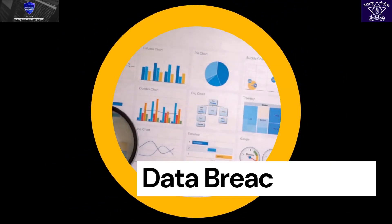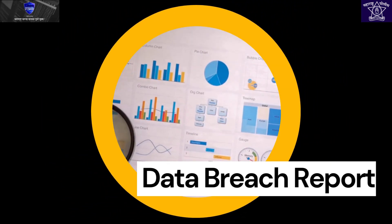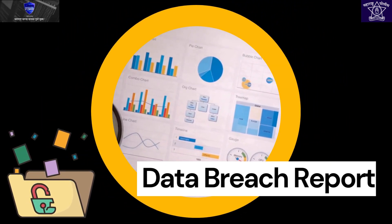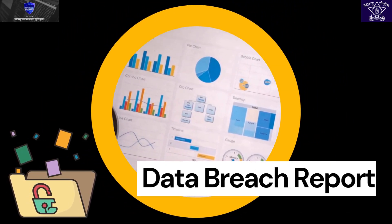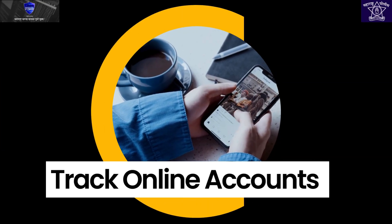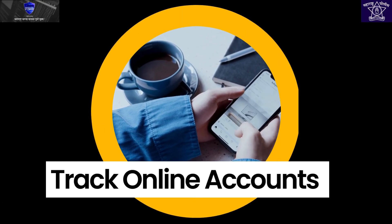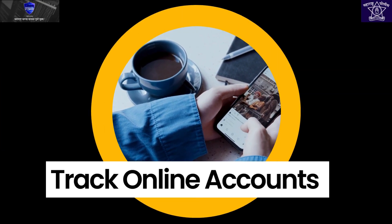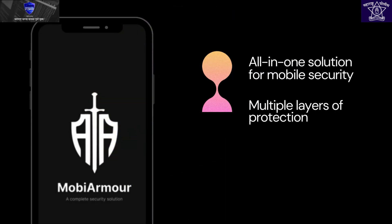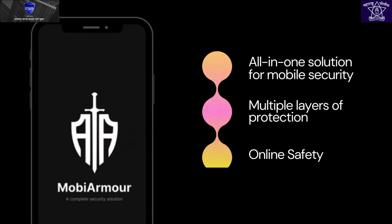Data Breach Report: get alerted if your email is compromised in a data breach, so you can take immediate action to protect your identity. Online Accounts: uncover the number of social media profiles linked to a specific email address. MobiArmor is your all-in-one solution for mobile security, providing multiple layers of protection to safeguard your personal data and ensure your online safety.